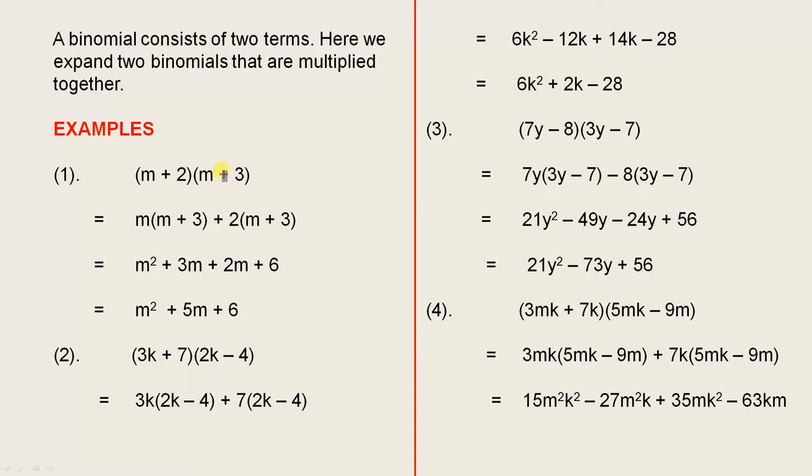So what we need to do is expand them, that is to remove those grouping symbols or brackets. And the way we do it is this: we multiply m by m plus 3, and that is what I have done here. Then we multiply 2 by m plus 3, and that is what I have done here. So all we do now is expand each of these, as we did in the previous video.